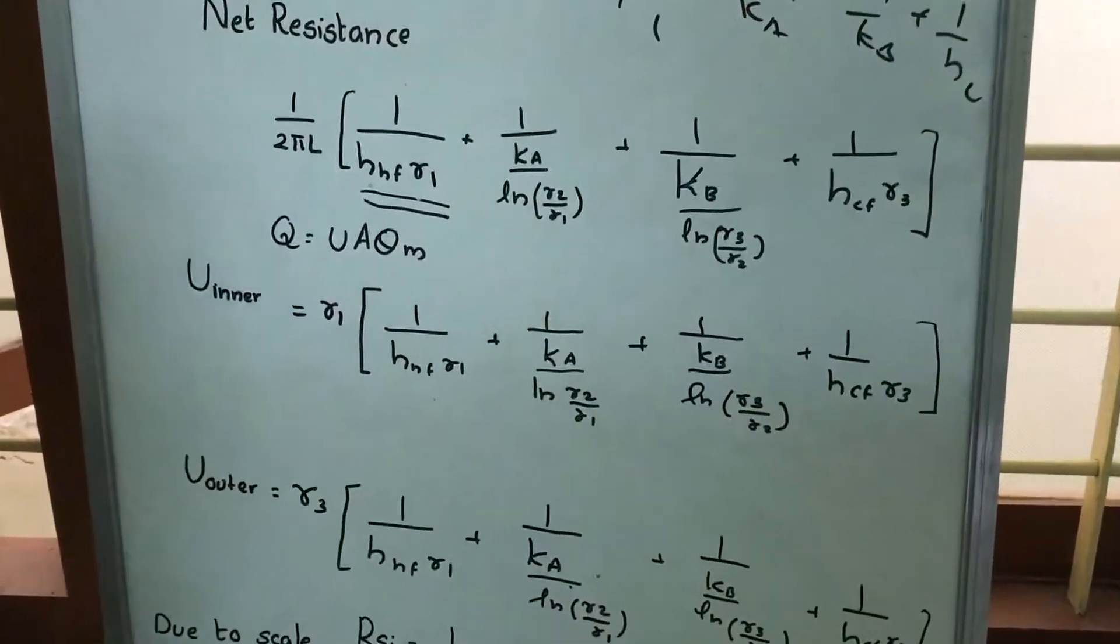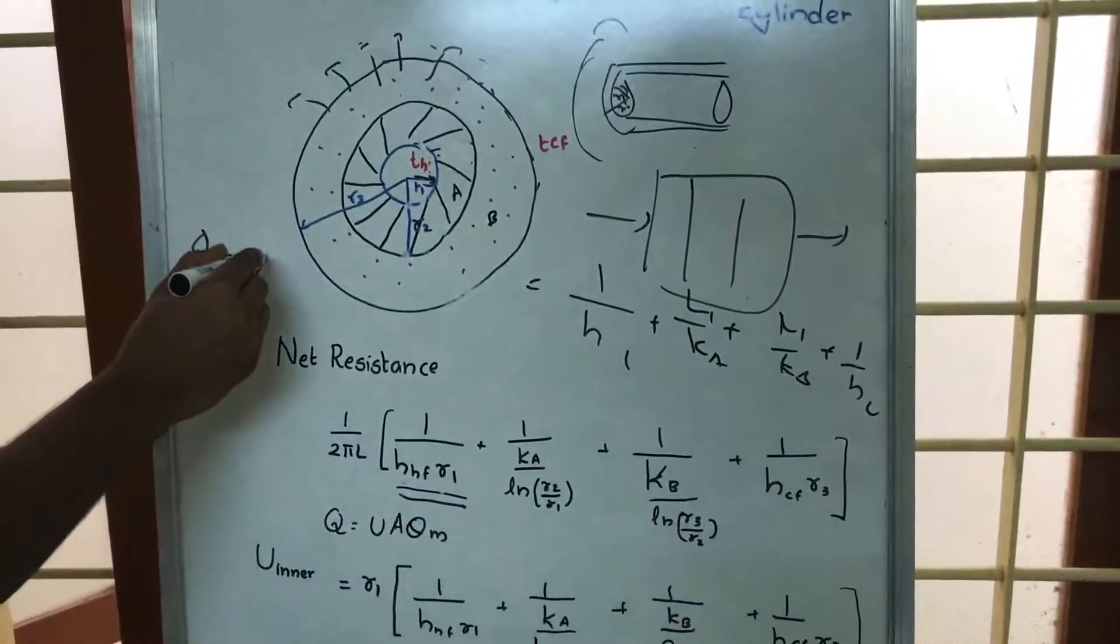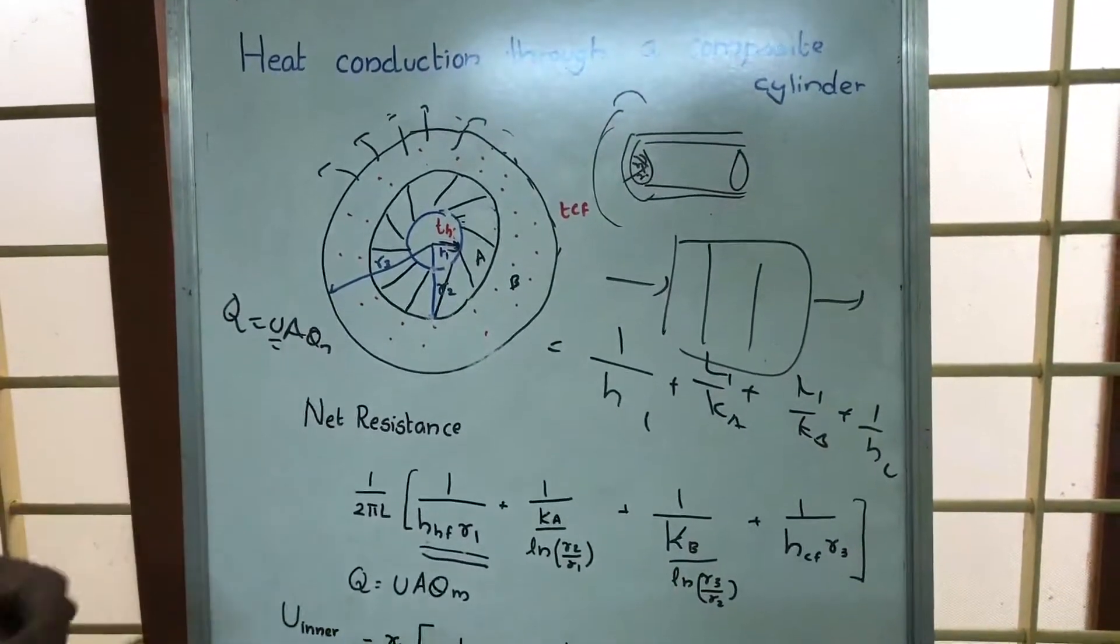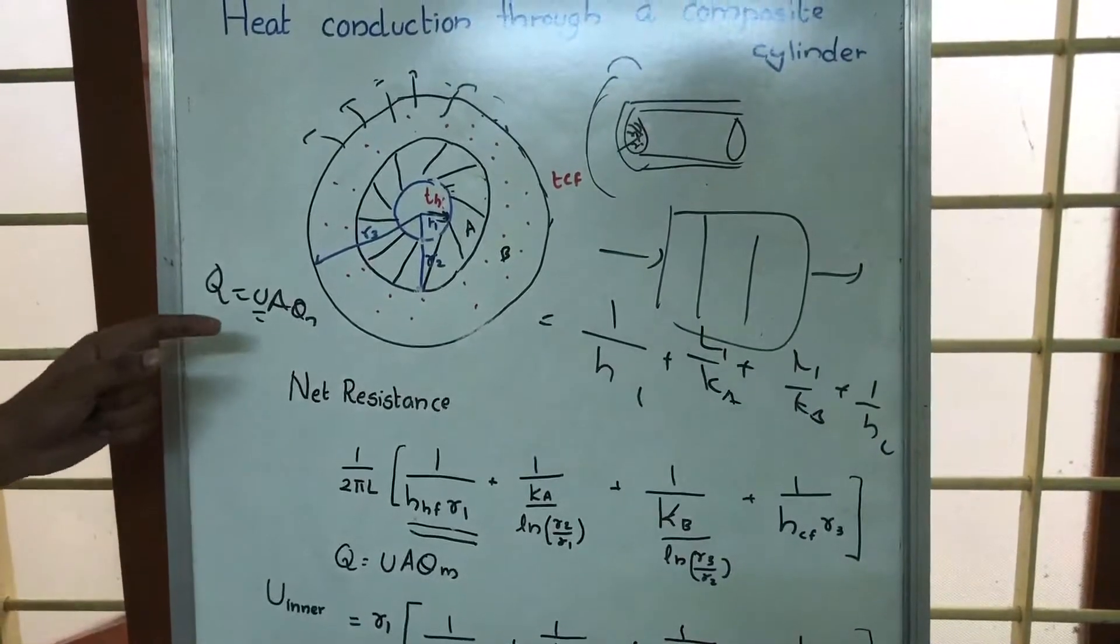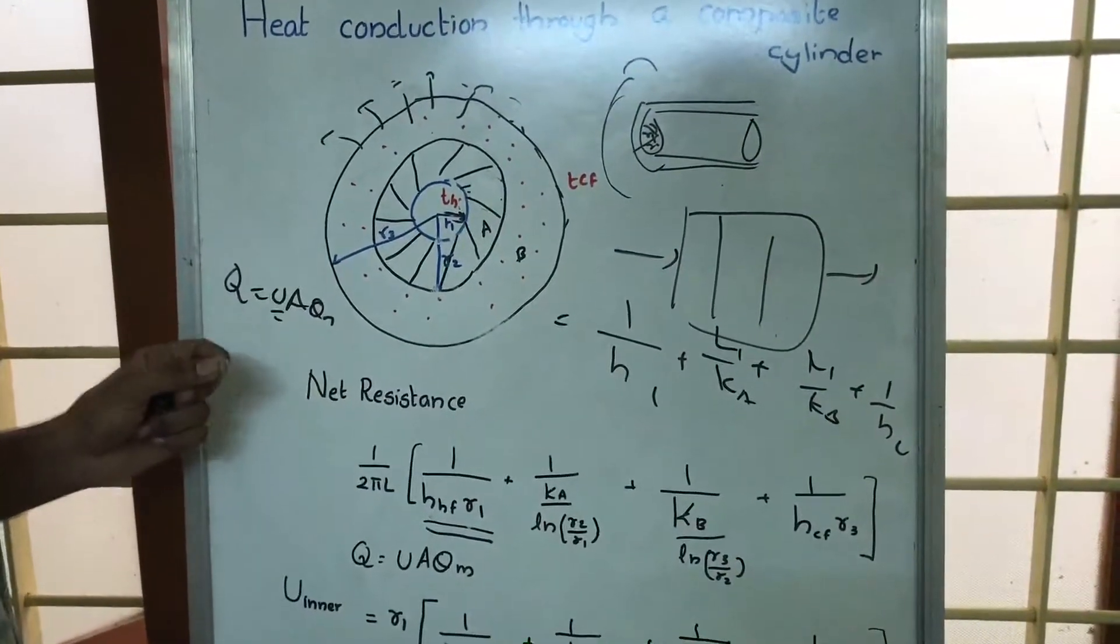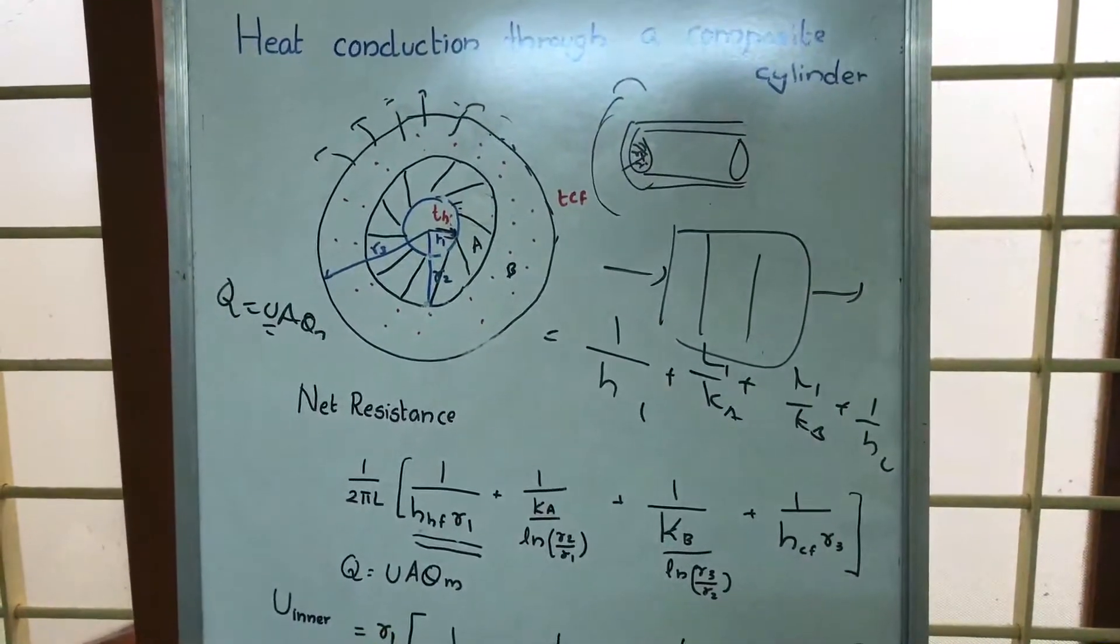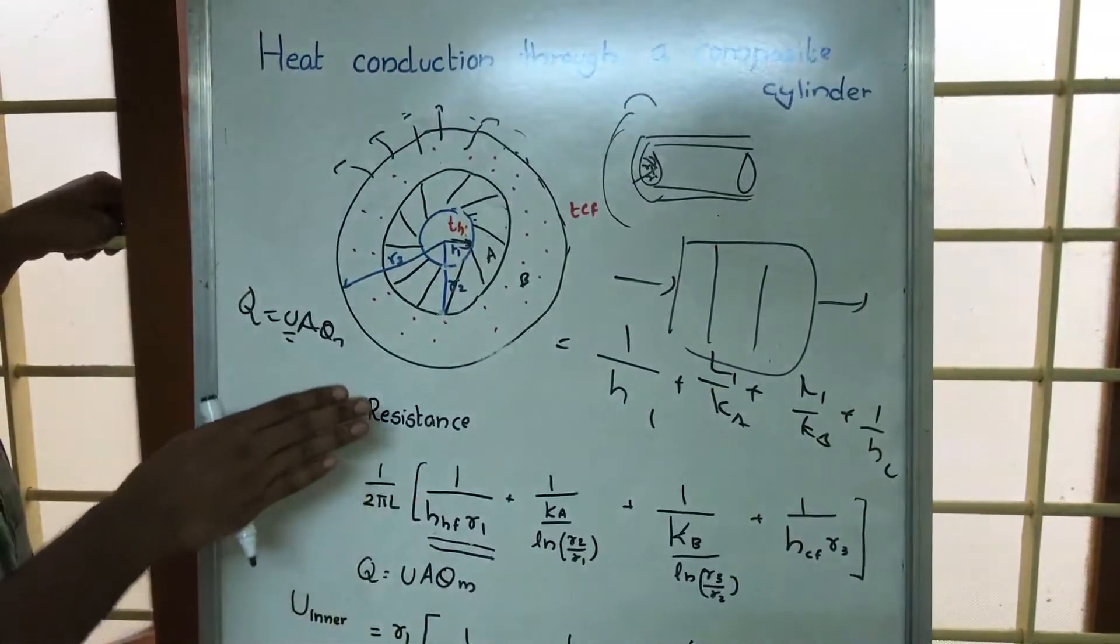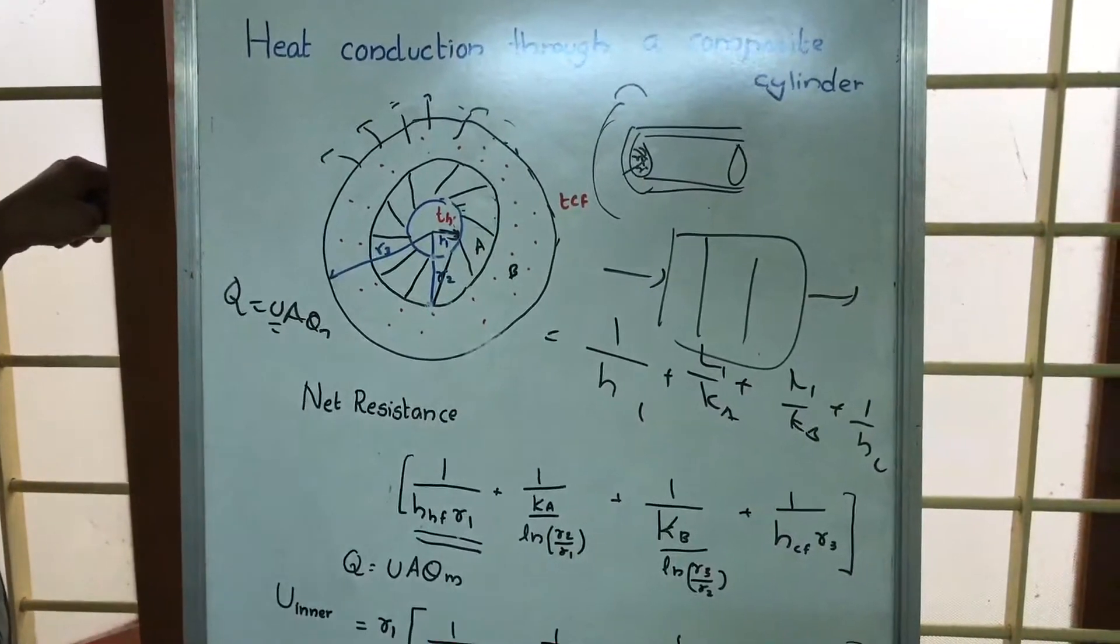Now if you have to find this, Q equals U A θM, where U is the overall heat transfer coefficient. We can find U by either considering the inner surface or the outer surface. From this net resistance, in order to get U, we should remove the 1 by 2πL term.